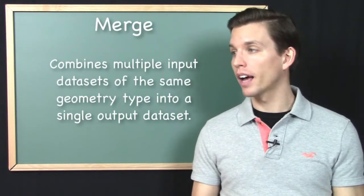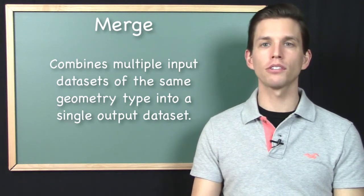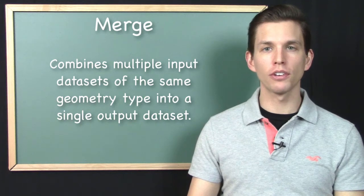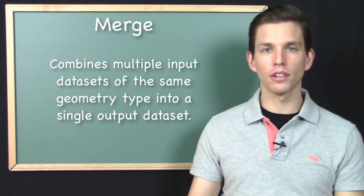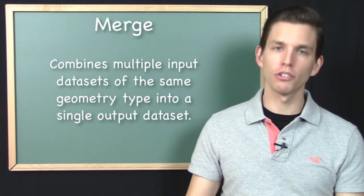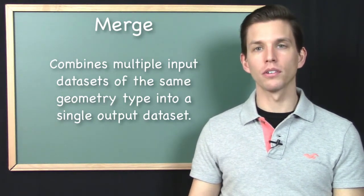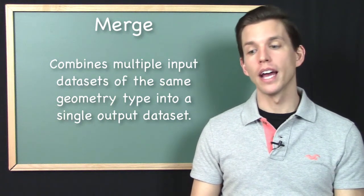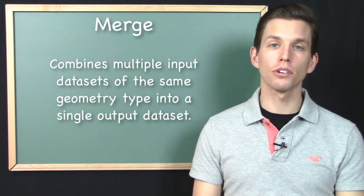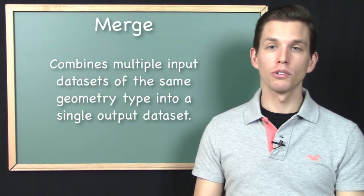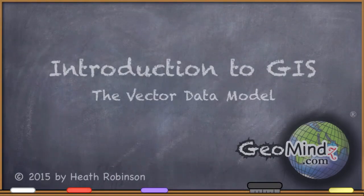So that's the Merge tool. At its core, it takes datasets of the same geometry type — two or more — and sticks them all together as one output file. Very simple, but very useful in many circumstances. We'll move on to the next geoprocessing tool in the next video.